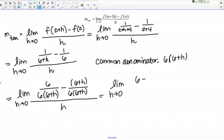6 minus, so I've got 6 minus the quantity 6 plus h. I just need to remember to distribute that subtraction sign to both terms. So it'll be 6 minus 6 minus h over 6 times 6 plus h. That's all in the numerator, and that's all over h in the denominator.